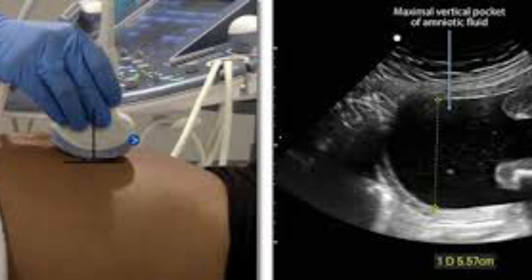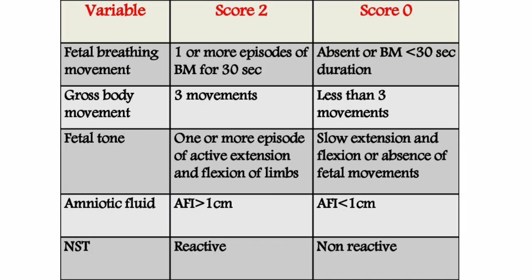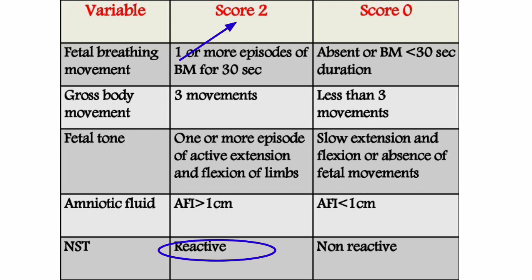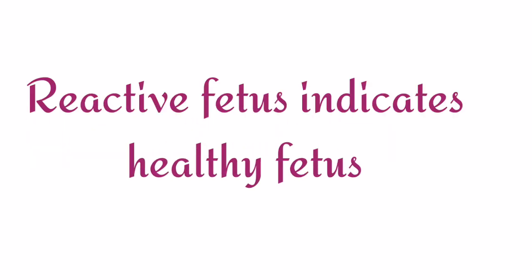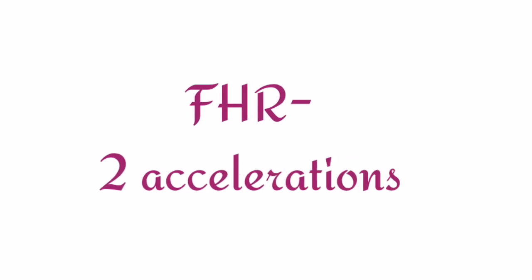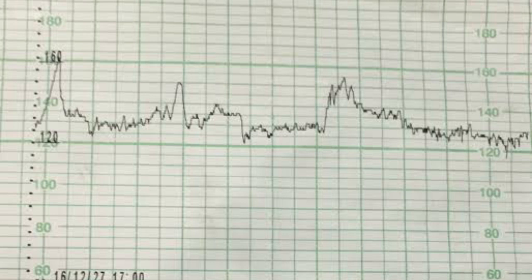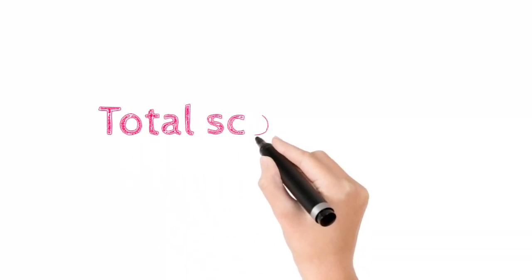Amniotic fluid is mostly measured using the amniotic fluid index. If the amniotic fluid index is greater than or equal to one centimeter, we give a score of two; if less than one centimeter or absent, the score is zero. The fifth parameter is the non-stress test result. If the baby is reactive, score is two; if non-reactive, score is zero. A reactive fetus indicates a healthy fetus — that is, two accelerations of 15 beats per minute lasting 15 seconds during a 20 to 30 minute period.